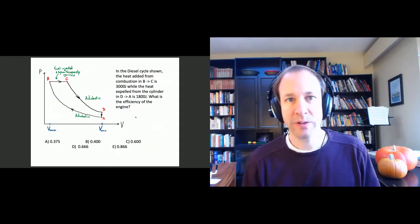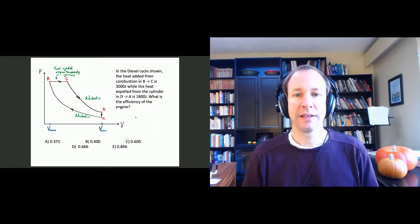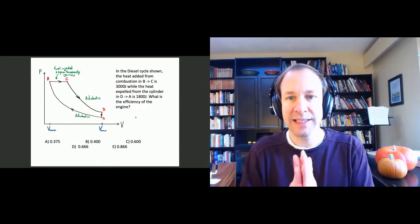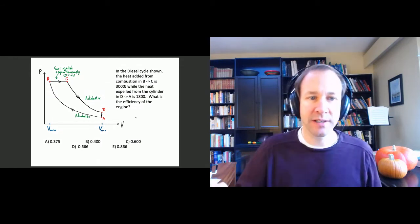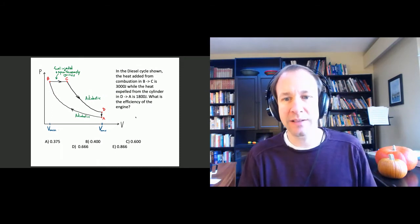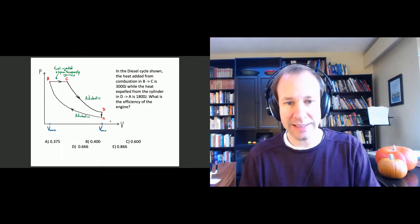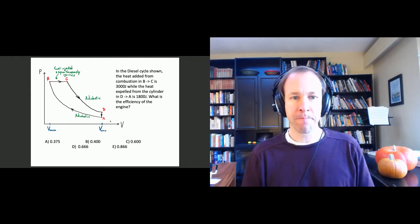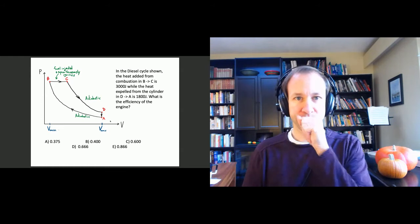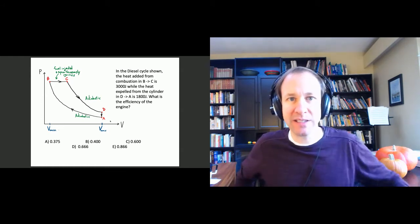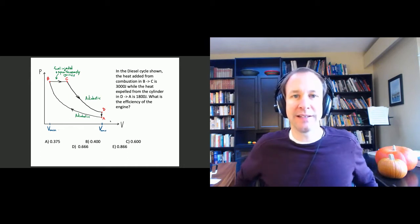Here's a question to apply that. We're told that in a particular diesel cycle, the heat added in the combustion step is 3,000 joules, while the heat expelled during process D to A is 1,800 joules. We want to calculate the efficiency of the engine. Take a few minutes to think about it and commit to one of the answers.